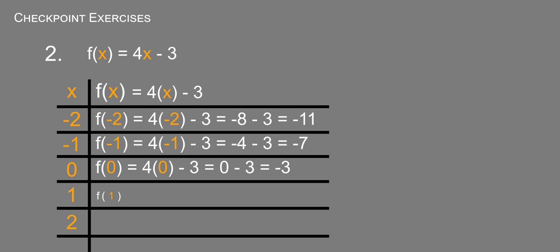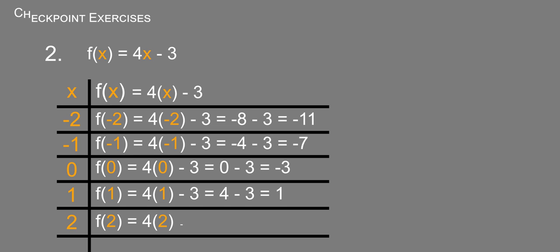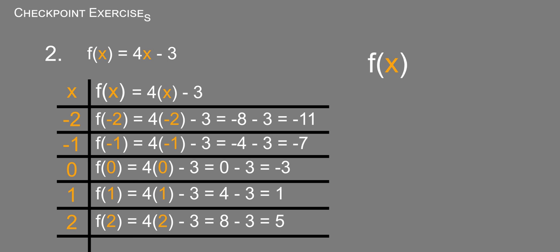f of 1 equals 4 times 1 minus 3, which equals 4 minus 3, which equals 1. And f of 2 equals 4 times 2 minus 3, which equals 8 minus 3, which equals 5. And this is the value of f of x.